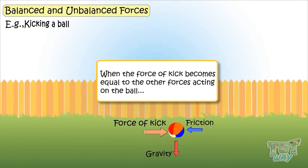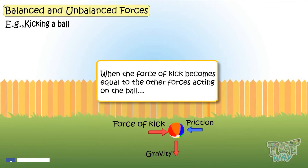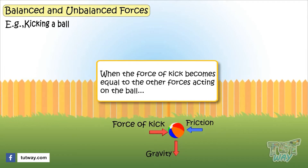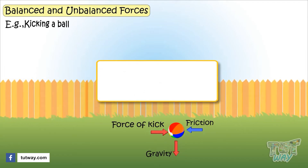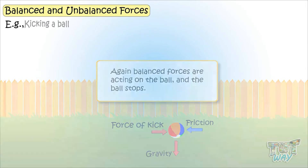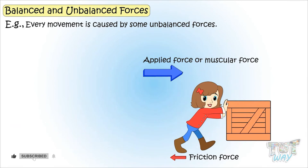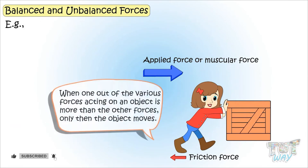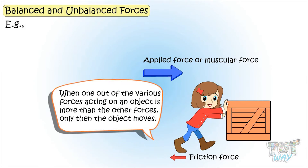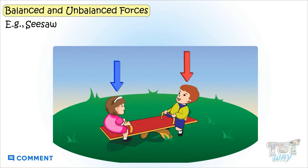The force of the kick gradually decreases and the ball slows down. When the force of the kick becomes equal to the other forces acting on the ball, balanced forces are again present and the ball stops. So any movement is caused by unbalanced forces — when one of the various forces acting on an object is more than the others, only then does the object move.